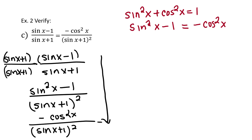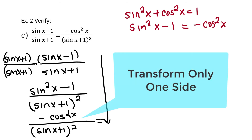Replacing the numerator sine squared x minus 1 with negative cosine squared x, the denominator is (sine x plus 1) squared. We have transformed the left-hand side to match the expression on the right-hand side. Again, all transformations must take place on one side of the equal sign only.